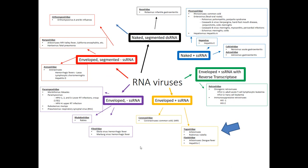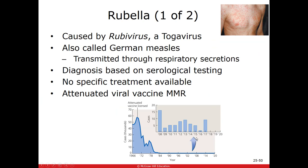Moving to the enveloped, positive-sense, unsegmented, single-stranded RNA group: the togaviridae and flaviviridae. Many of these are arboviruses, but we'll start with one that isn't: the rubivirus, or rubella — also called German measles. It's spread through respiratory secretions. There's no specific treatment, but we can prevent it with the MMR vaccine — measles, mumps, and rubella. Since the vaccine was introduced, the number of cases has drastically decreased, though we're still seeing outbreaks in non-vaccinated areas and groups.